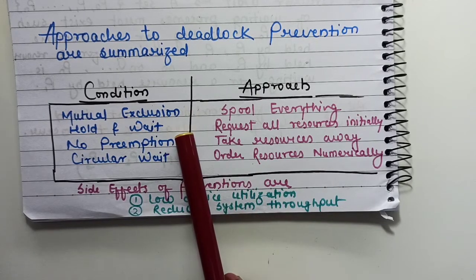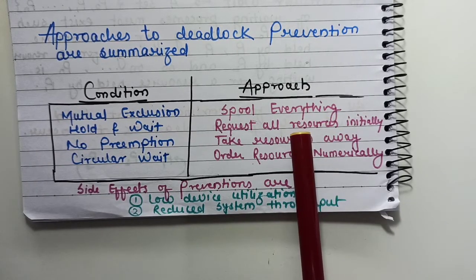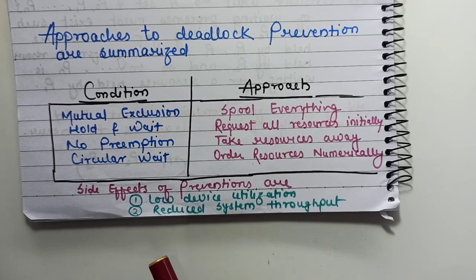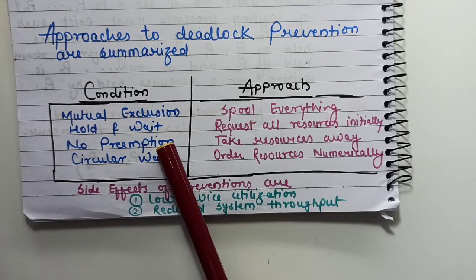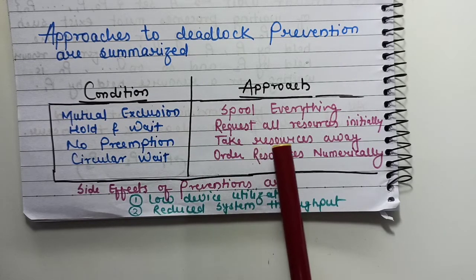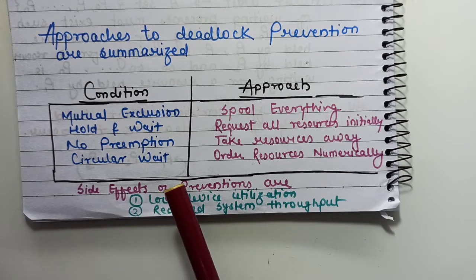The first condition is mutual exclusion — any non-sharable resource can only be accessed by one process at a time. The second is hold and wait: if a process is holding some resources and waiting for additional resources, all processes have to request all resources initially. If you are directly listening to this video, please go through the last video on deadlock prevention first.